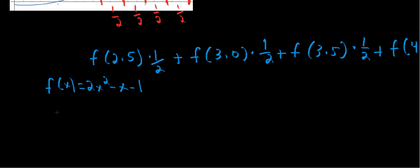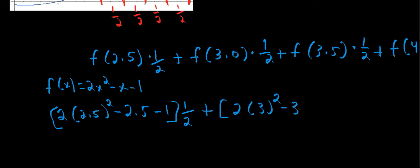So starting with this one, f of 2.5. What's f of 2.5? So we have 2 times 2.5 squared minus 2.5 minus 1, all multiplied by 1 half. Plus what's f of 3? Well, that's 2 times 3 squared minus 3 minus 1 times 1 half.